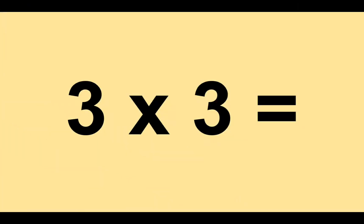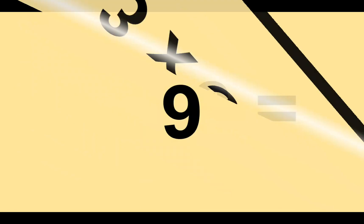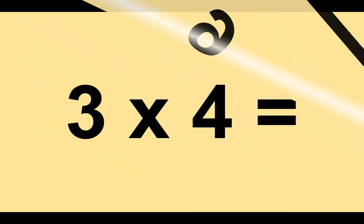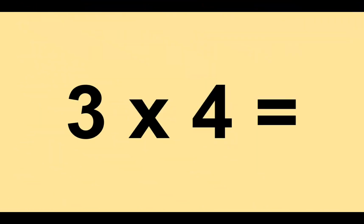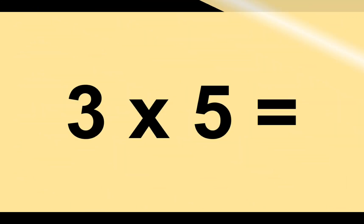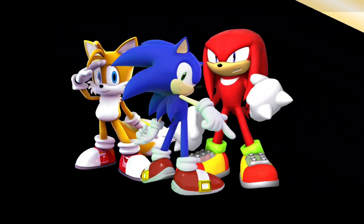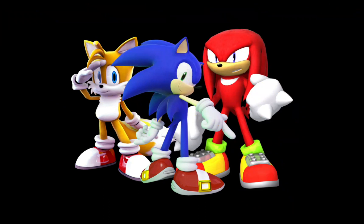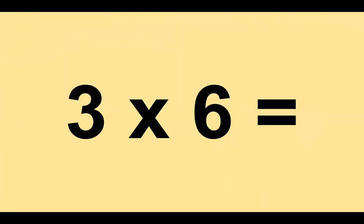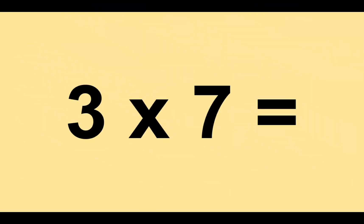Three times three equals nine. Three times four equals twelve. Three times five equals fifteen. Three times six equals eighteen. Three times seven equals twenty-one.